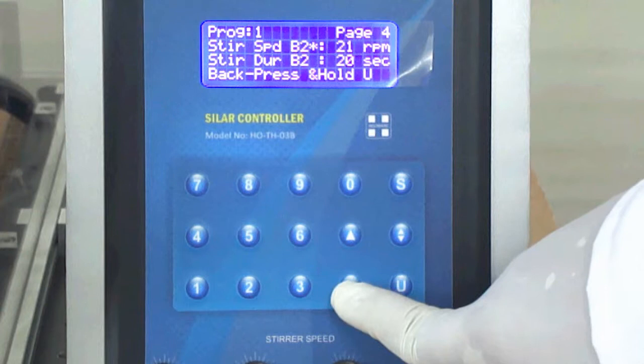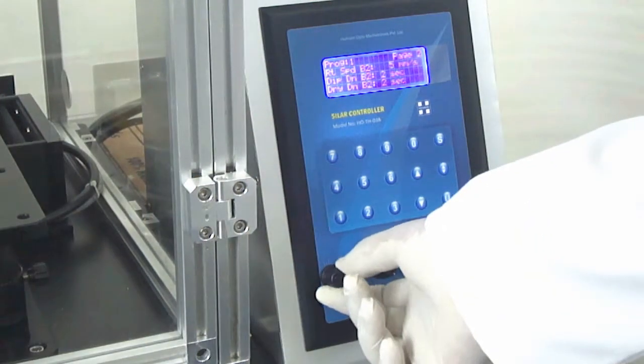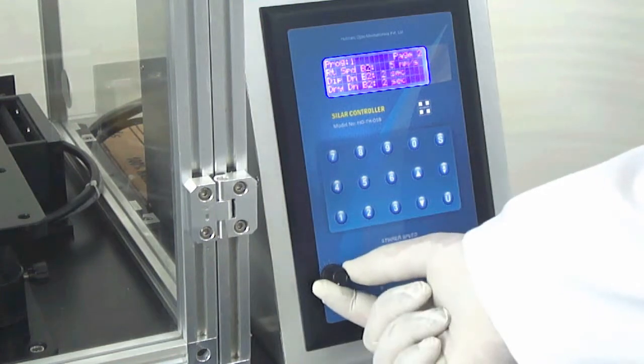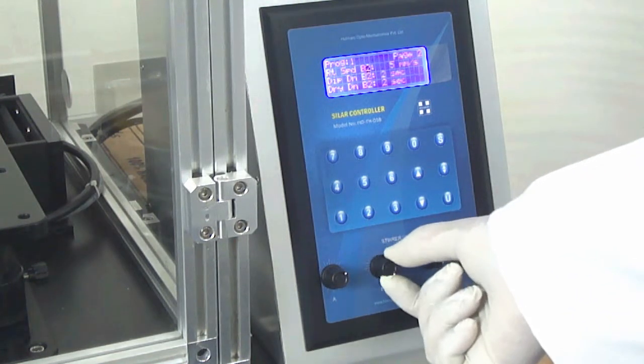We can also set different values at each of the four beakers as required of the process. We can also control RPM of the magnetic stirrers for each beaker independently.